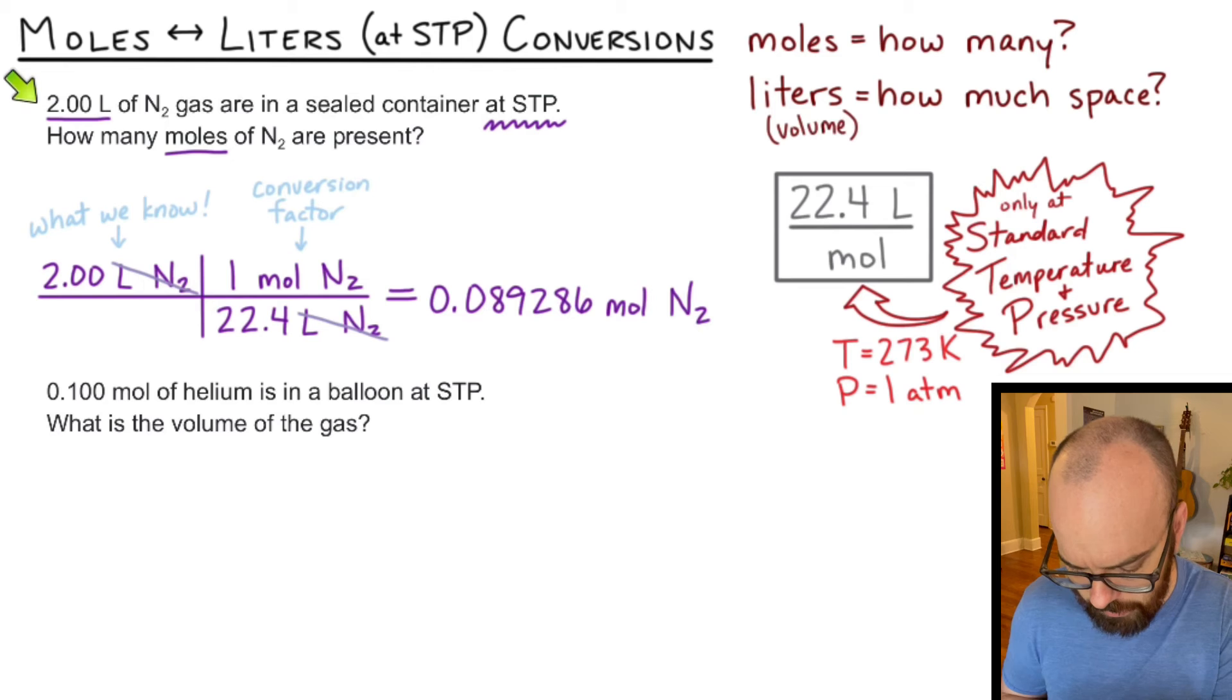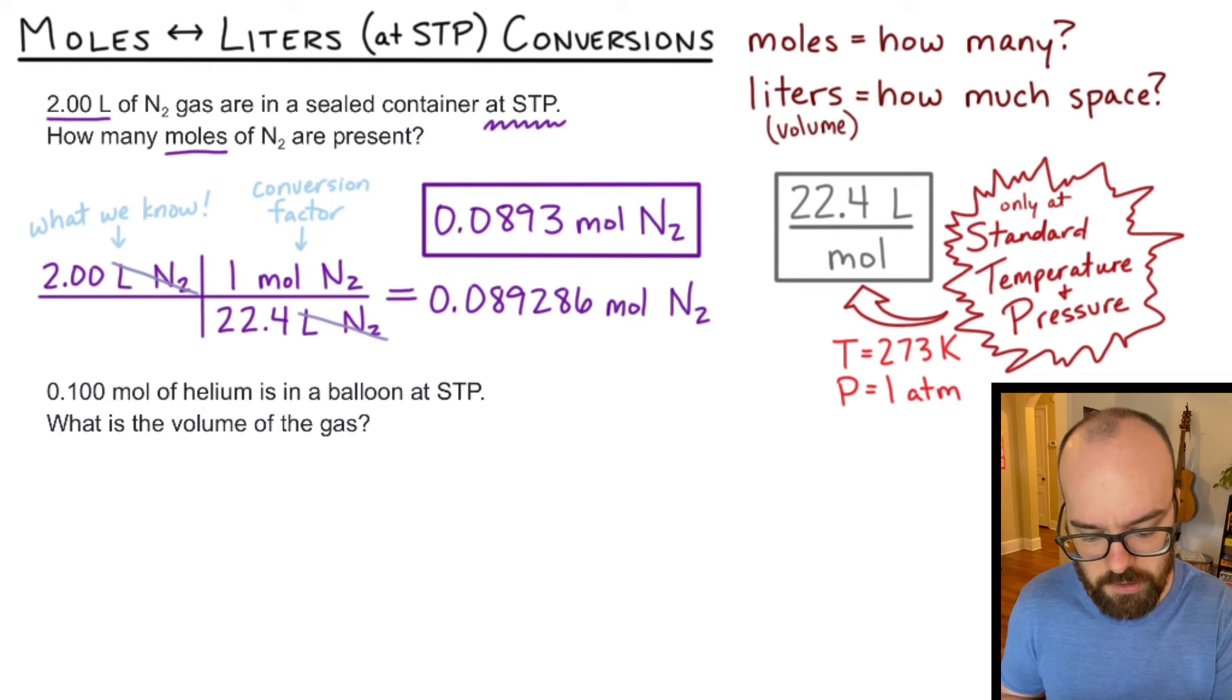I have three sig figs in my problem here. That's the least number that I have. So I get to keep three sig figs and so around 0.0893 moles of nitrogen. So if I filled up a two liter soda bottle with only nitrogen at STP, I would have 0.0893 moles of nitrogen.